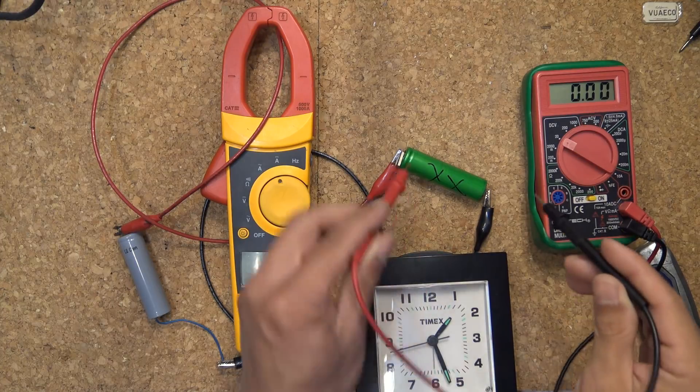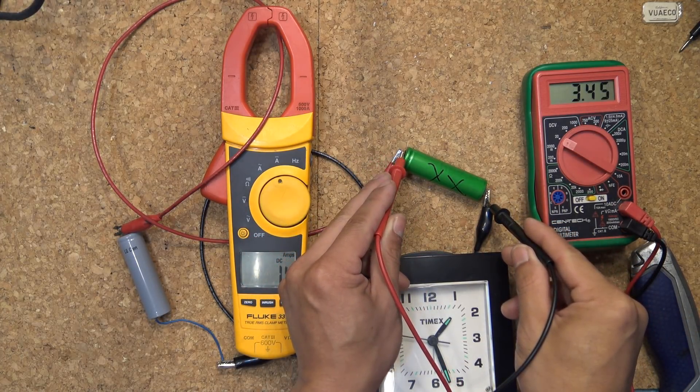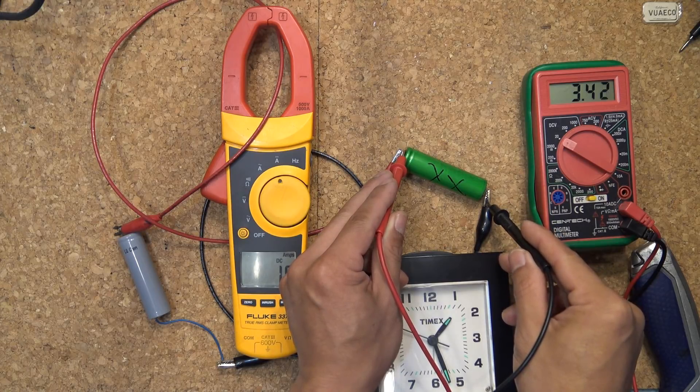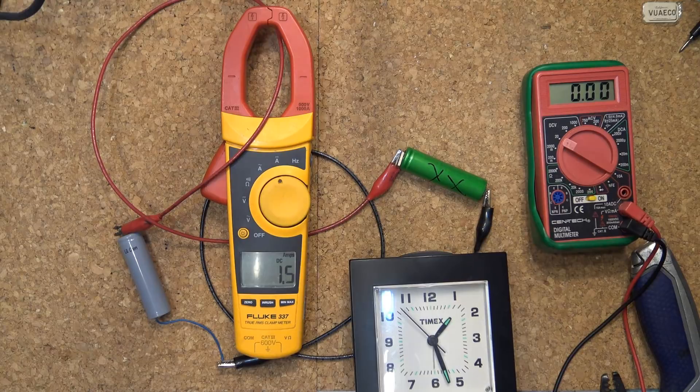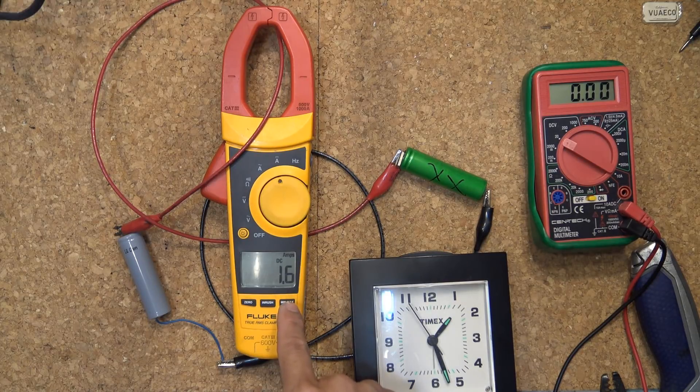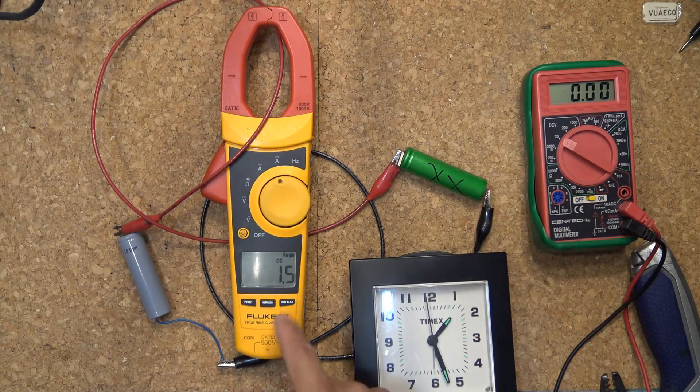Let's see what the voltage of the battery is right now. We got 3.4 volts now, 45 seconds, 1.6 amps, and it's stable at 1.6, 1.5 amps.